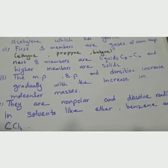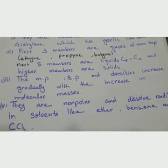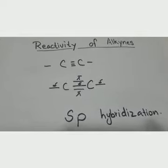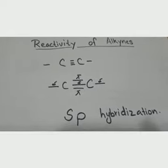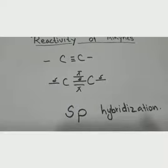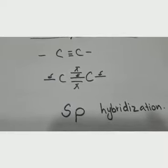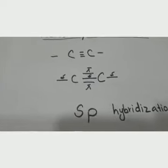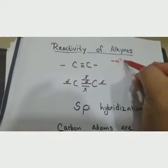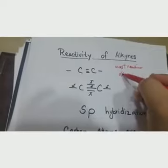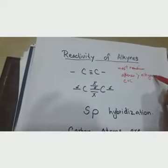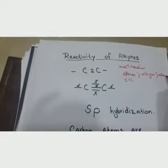Now we will talk about the chemical reactivity of alkynes. Chemical reactivity lies between alkynes and alkanes. Among hydrocarbons, alkenes with double bonds are most reactive, followed by alkynes with triple bonds, and then alkanes are least reactive.